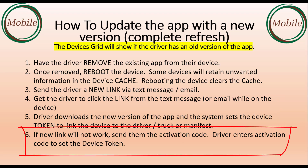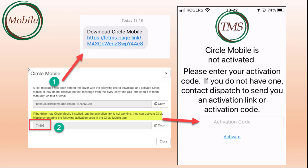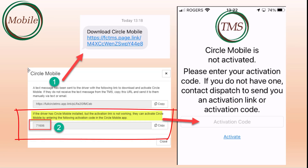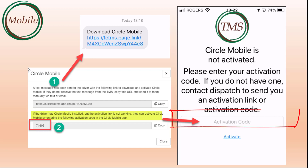If the new link will not work, send them the activation code. They can enter the activation code to set the device token. New with this release is the ability to activate the app with a code. If the app is downloaded but not activated, dispatch can send the driver an activation code, and the driver enters it to establish the device token.